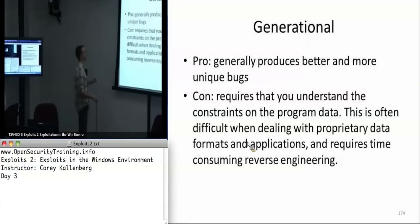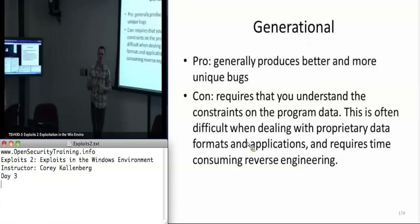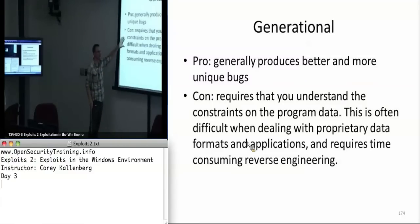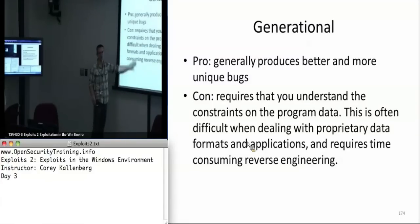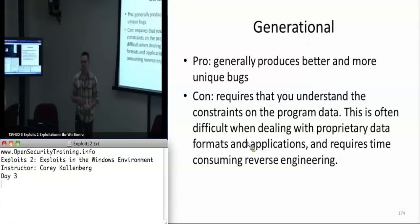Generational fuzzing is good because it generally produces better bugs. When you really understand the document format you're trying to fuzz, you can really try to hit all the corner cases precisely. The con is that you have to understand the complete specification of what you're fuzzing, and that is often difficult or not tractable. Most of the time we're fuzzing a proprietary application and the specification might not be known, so you'd have to spend a lot of time reverse engineering what the specification is supposed to be. If it's an open specification, this becomes a lot more tractable. But in general, this approach yields better bugs than mutational fuzzing.